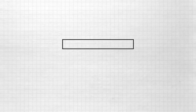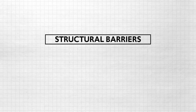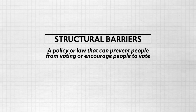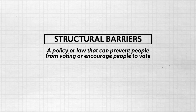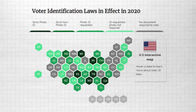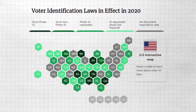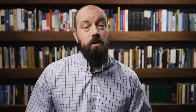First, structural barriers can affect who votes. That just means a policy or law can prevent people from voting or encourage people to vote. An example of a structural barrier is voter ID laws. Some states have laws that mandate a government-issued identification in order to get access to the voting booth.